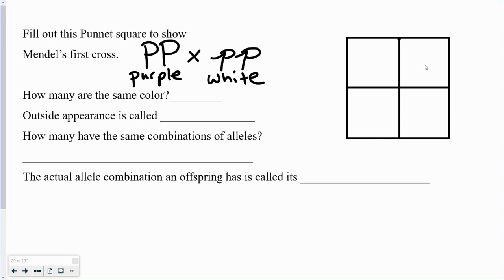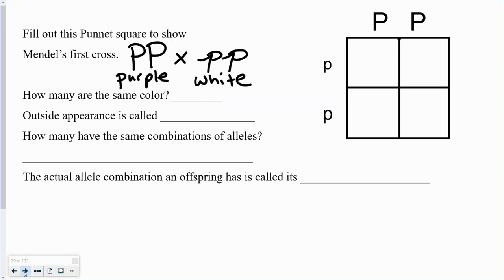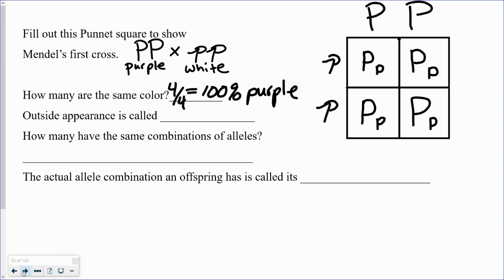So in class, I would have you fill out a Punnett square, and I'm just going to walk you through this. Remember Mendel's first cross was a true breeding purple plant with a true breeding white plant. So we fill out the Punnett square with the purple parent and the white parent. We drag the alleles down, and we find out that four out of four of them come out purple.